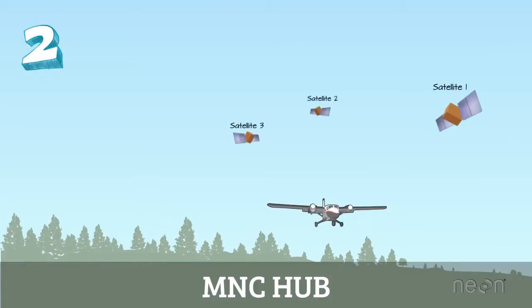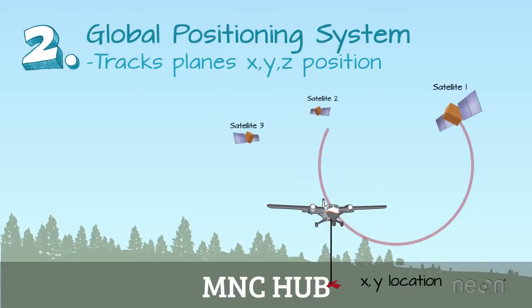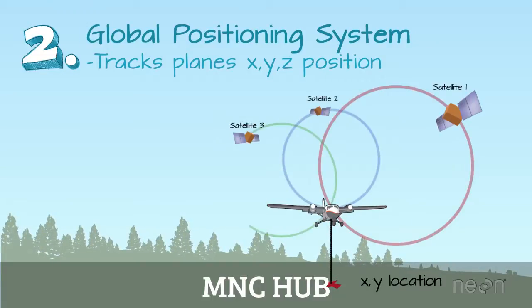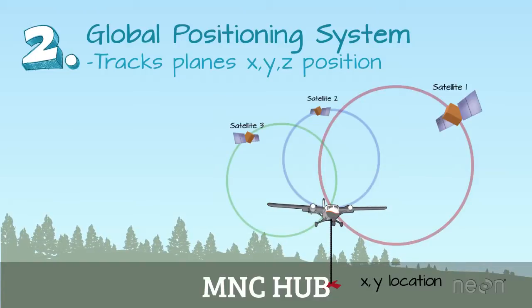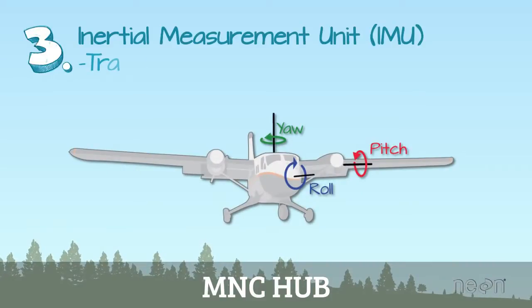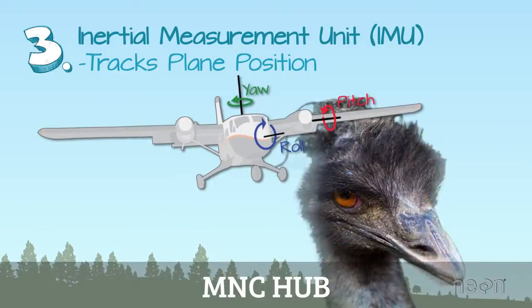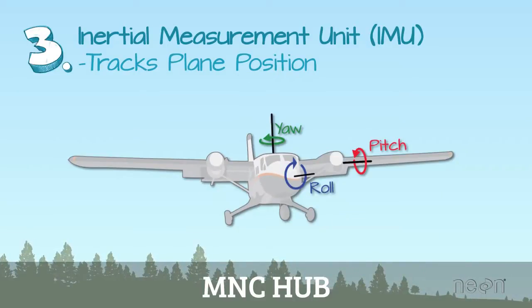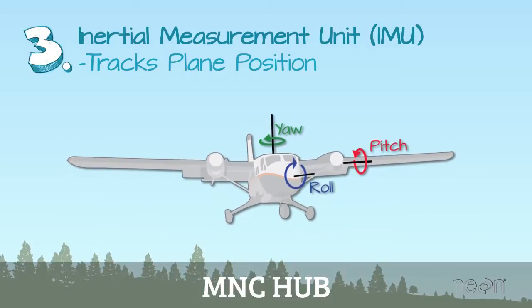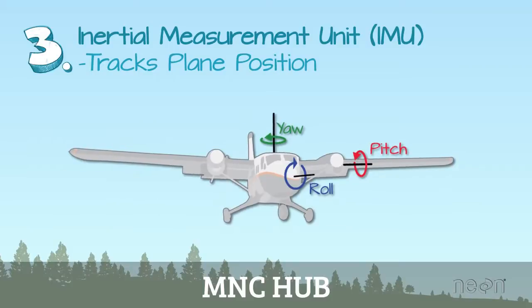The next component is a GPS receiver that tracks the altitude and XY location of the airplane, allowing us to figure out where LIDAR reflections are on the ground. The third component is what's called an Inertial Measurement Unit, or IMU. The IMU tracks the tilt of the plane in the sky as it flies, which is important for accurate elevation calculations.